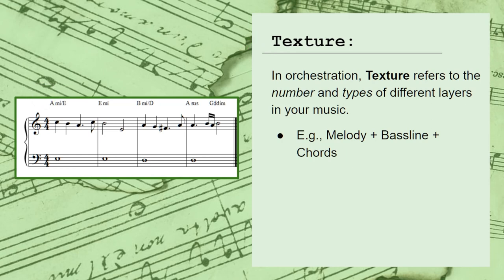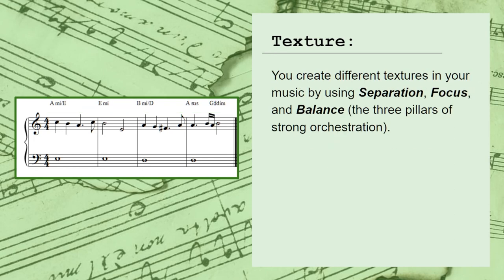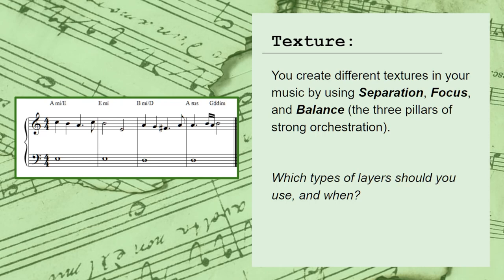First off, we need to talk about what exactly texture is. In orchestration, the word texture refers to the number and types of different layers in your music — for example, melody plus bassline plus chords. In an earlier video, we talked about how separation, focus, and balance can be used to create these structures and give your orchestration a clear sound. However, we never really talked about how to tell which types of layers you should use and when. These are the ideas that we're going to tackle starting with this video.